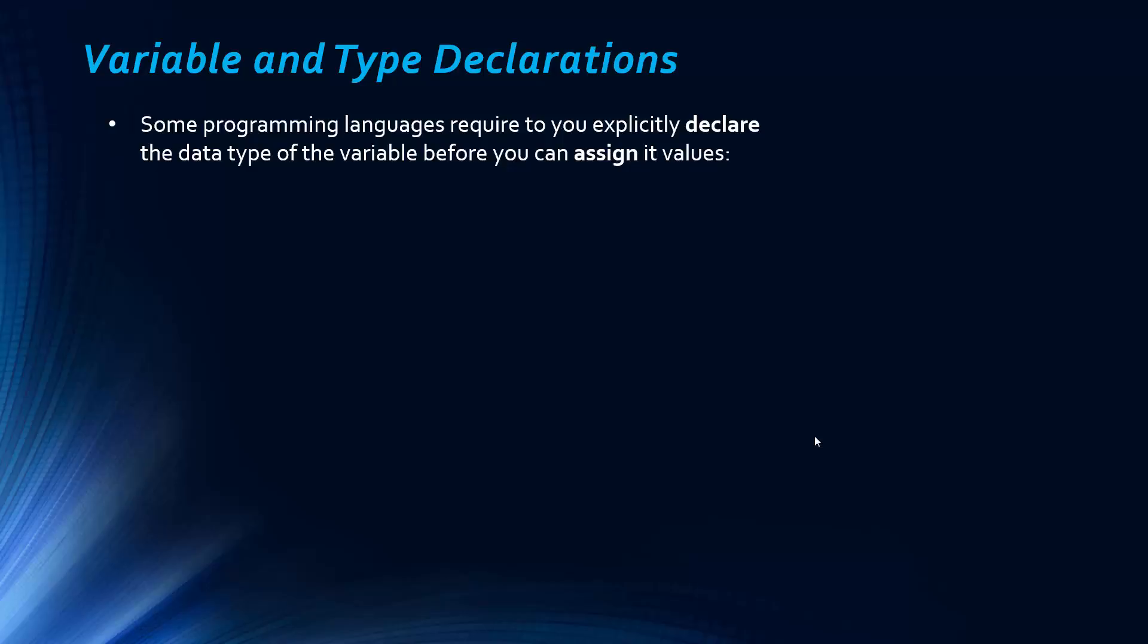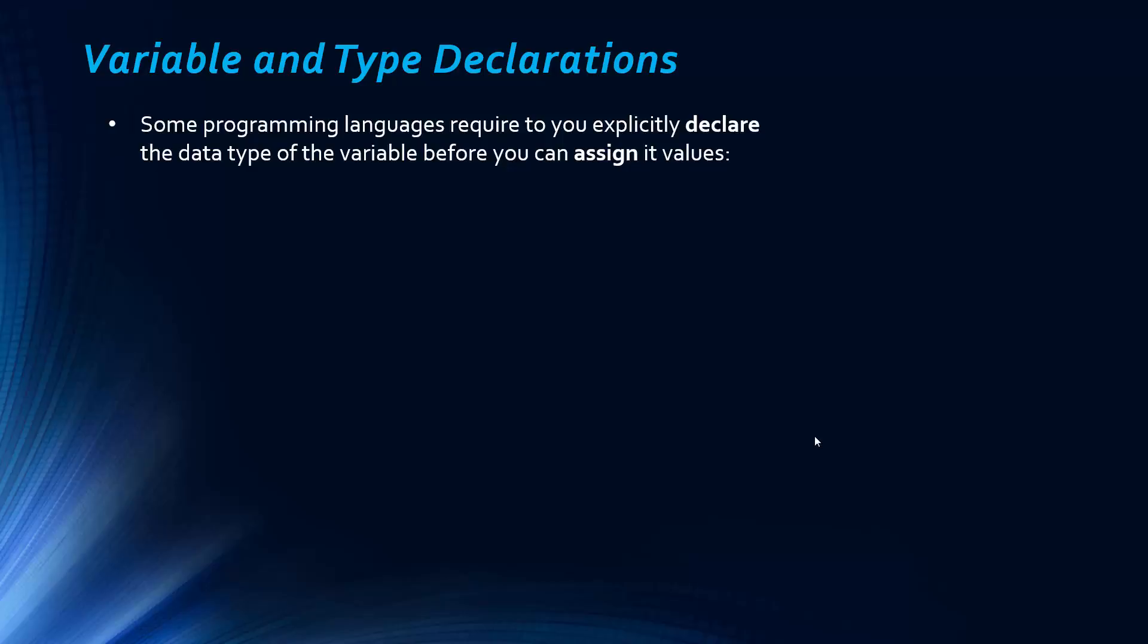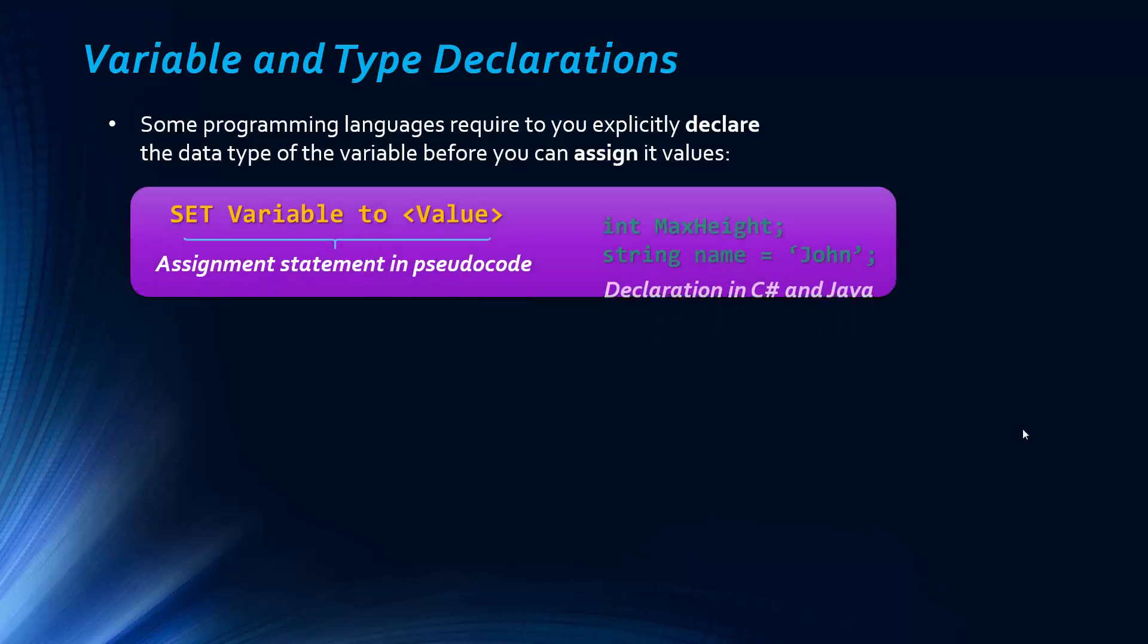Python, for example, doesn't require explicit declaration. It does it implicitly. So it happens automatically when you first assign it a value. So there's not a statement like this in C Sharp and Java needed to declare.